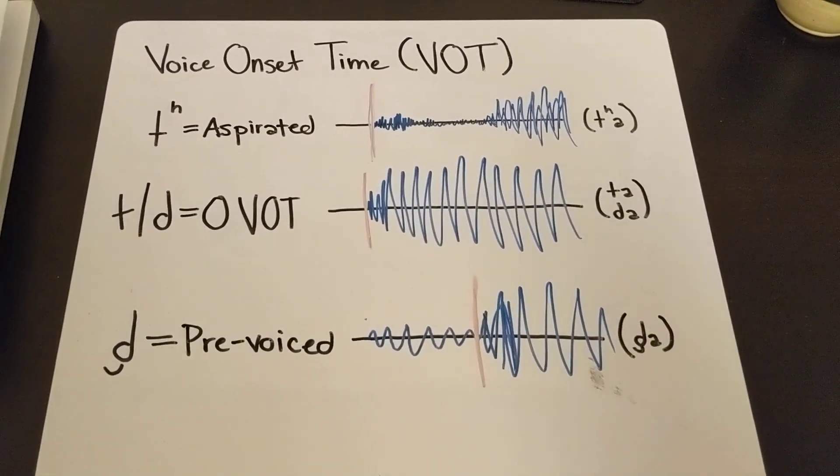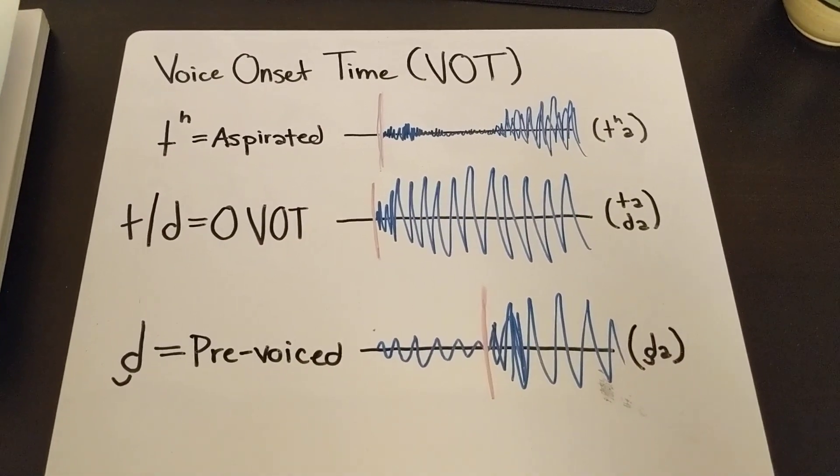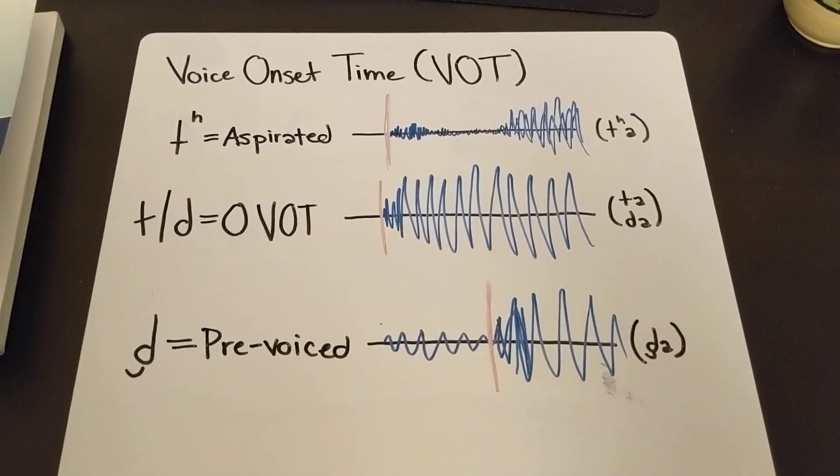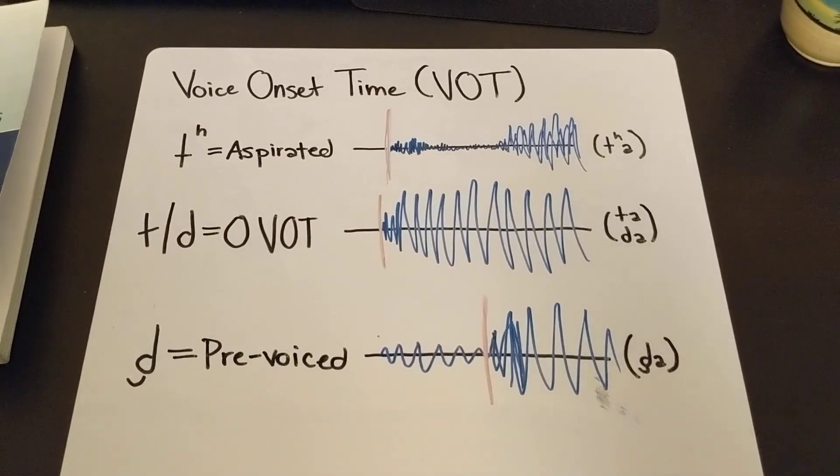Now this has to do with plosives, so things like T, D, G, K, P, B.